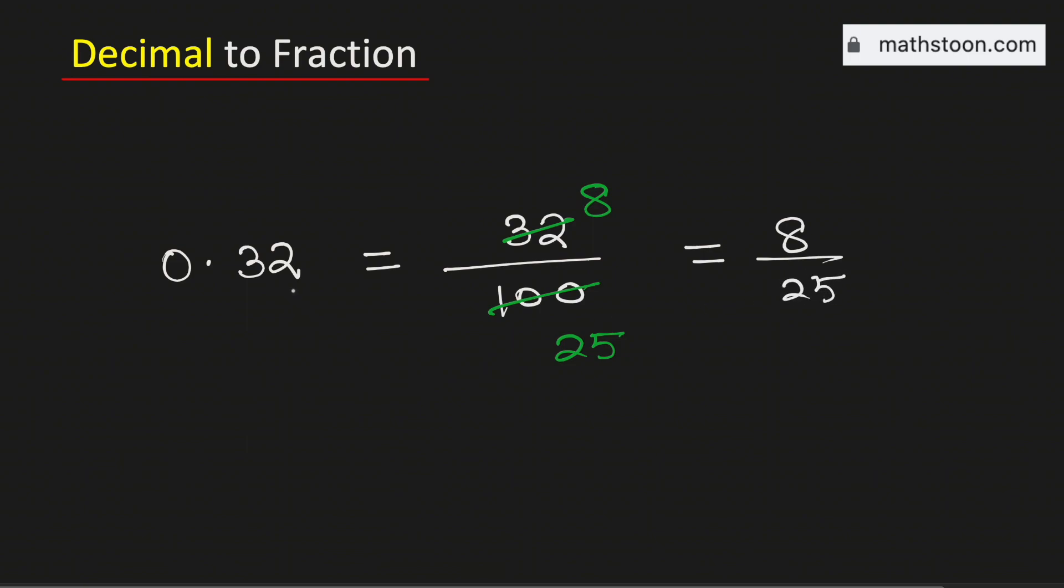Therefore, 0.32 as a fraction in simplest form is equal to 8 over 25. This is our final answer.